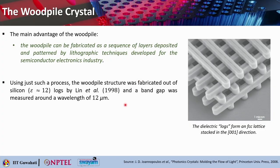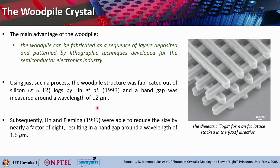You can take help of semiconductor foundries to fabricate these structures. Using such a process, the wood pile structure was fabricated out of silicon, which has permittivity around 12 — silicon logs — and that was done by Lin and colleagues in 1998. They could measure a bandgap at wavelength around 12 micrometers. Subsequently, Lin and Fleming in 1999 were able to reduce the size of this wood pile structure by a factor of 8, bringing it down to the near infrared range with a bandgap at 1.6 micrometers.